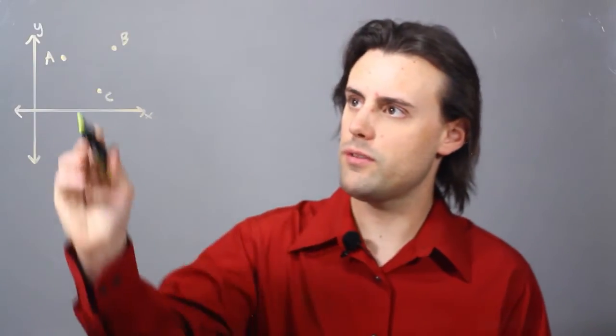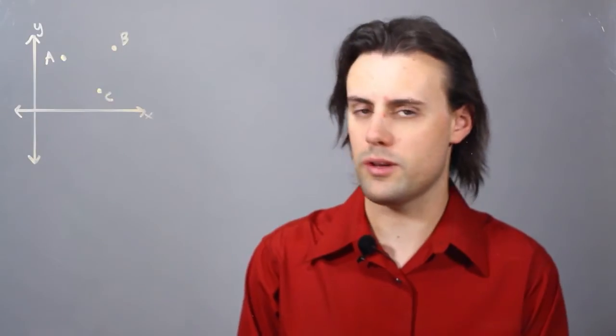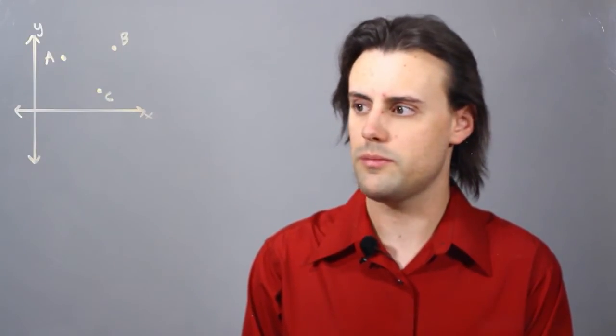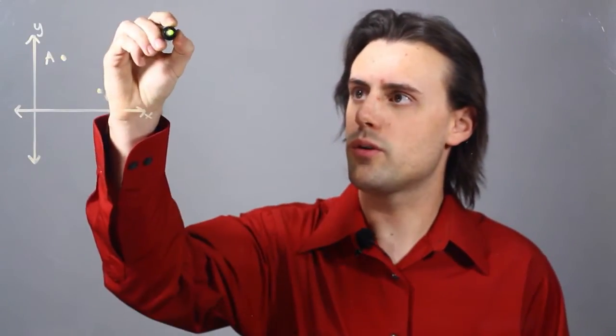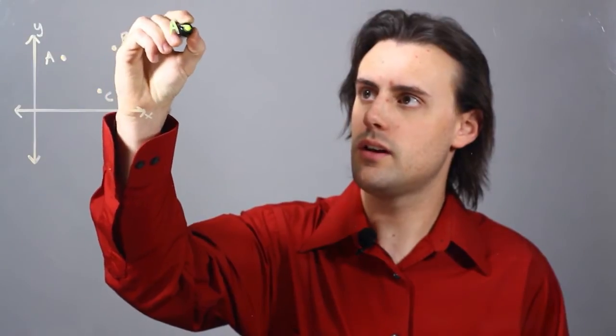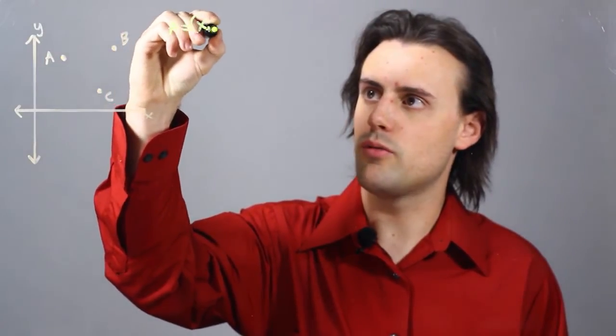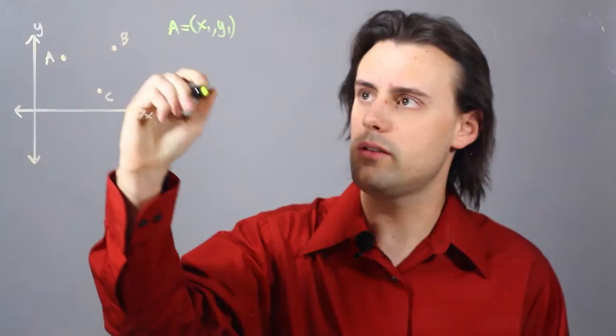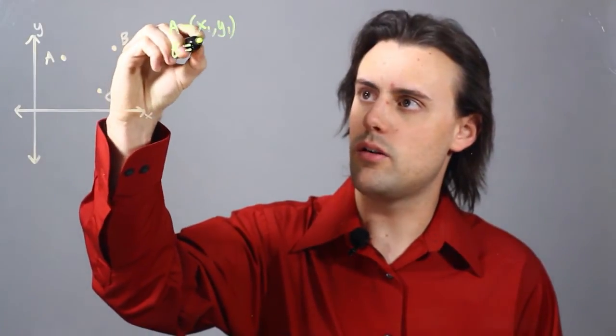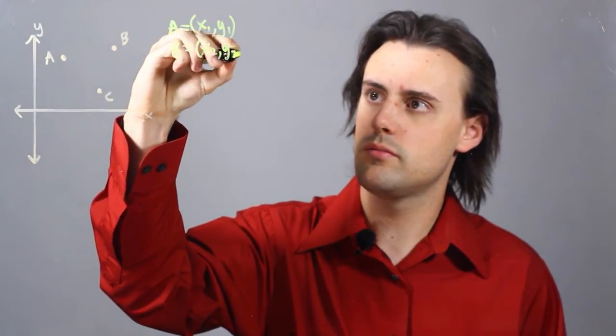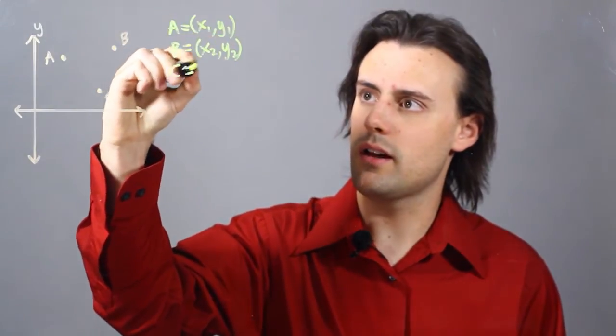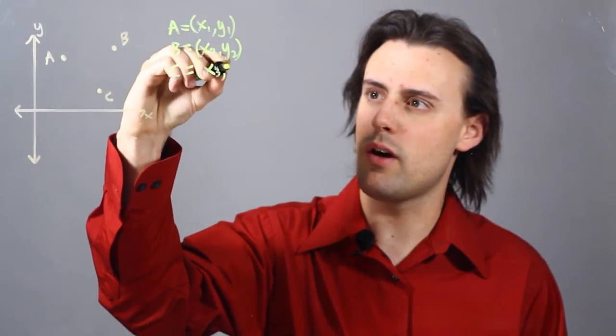If we're just given three points, we're assuming that we're also given the coordinates of these three points. I can write those coordinates down as A having x1, y1 coordinates, B with coordinates x2 and y2, and C with x3 and y3.